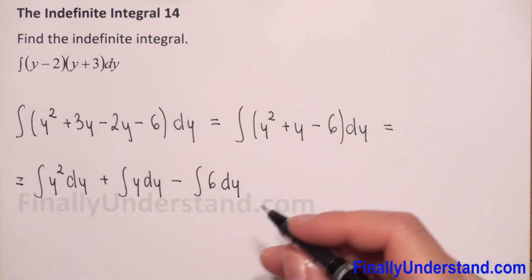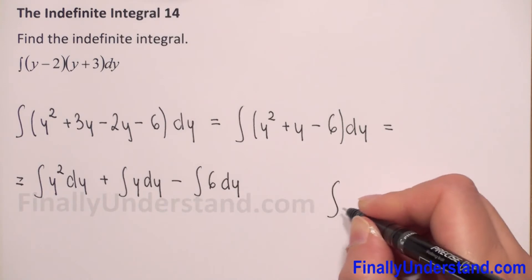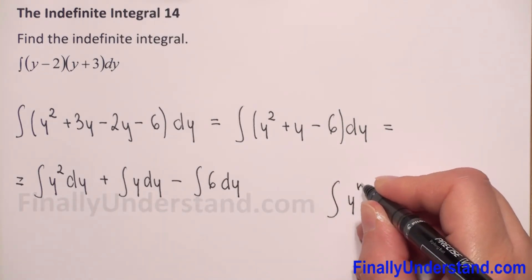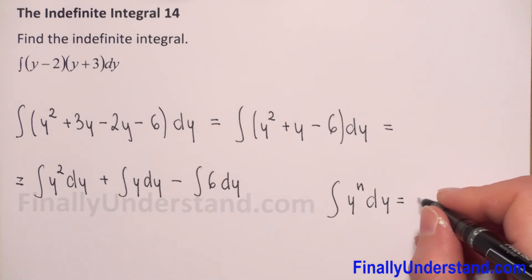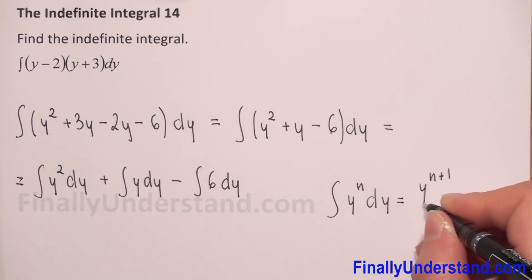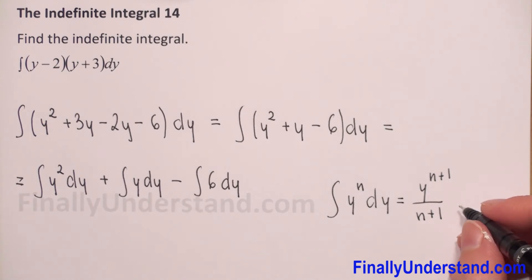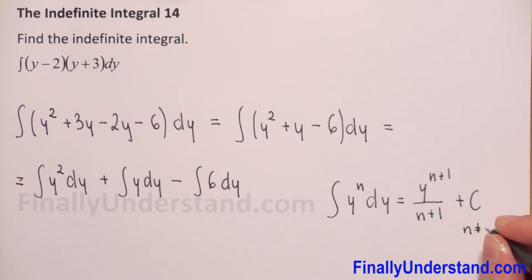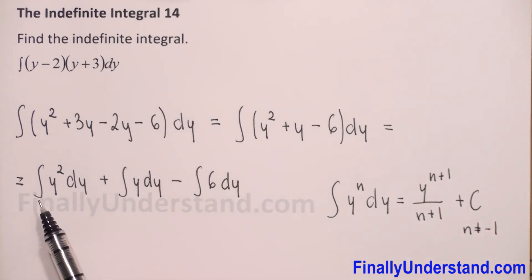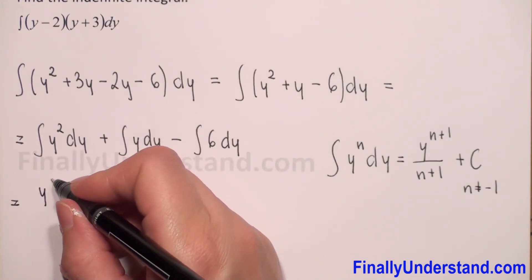Because we have power functions here, we will use the integral of a power function formula. When we have the integral of y to the power n with respect to y, this is equal to y to the power n plus 1 over n plus 1. For an indefinite integral we always add a constant. This formula can be used only when n is not equal to negative 1.